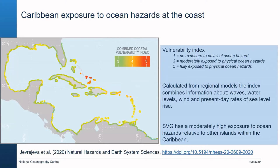This map shows an exposure index using a traffic light system where three is green up to five which is red and hazardous, looking at no exposure, moderate exposure, and full exposure. It includes waves, water levels, wind, and present-day rates of sea level rise. From this we can compare different parts of the Caribbean — St Vincent and the Grenadines has a moderately high exposure to ocean hazards relative to other islands, seen as a yellowy-orange shading.